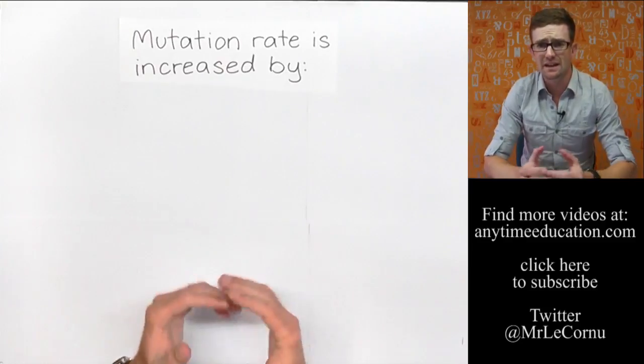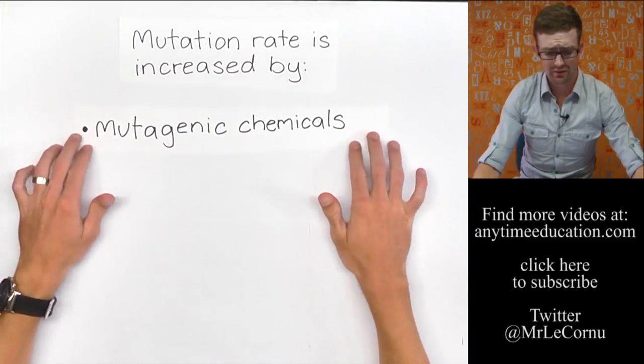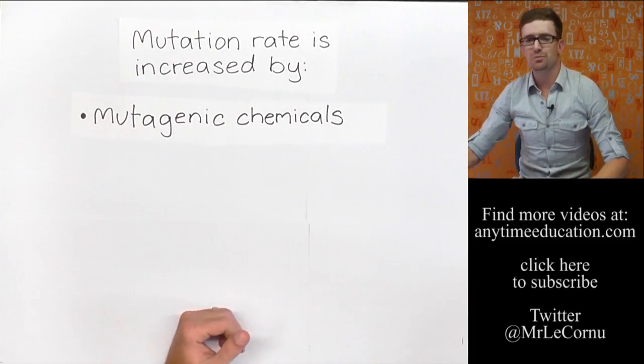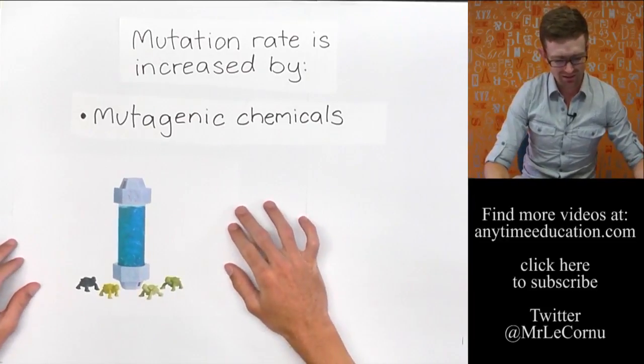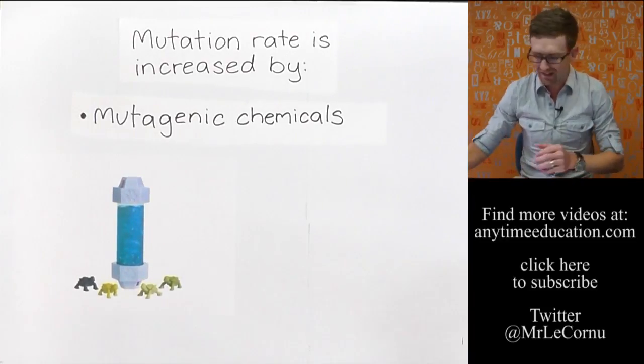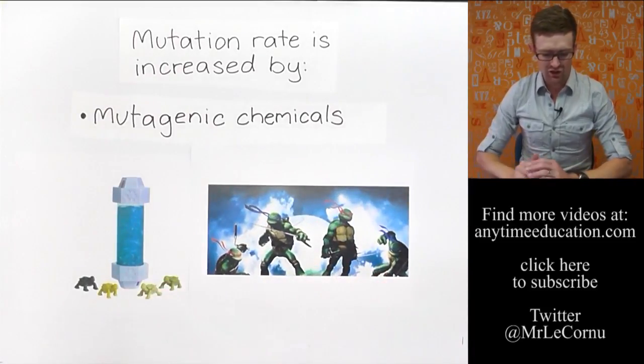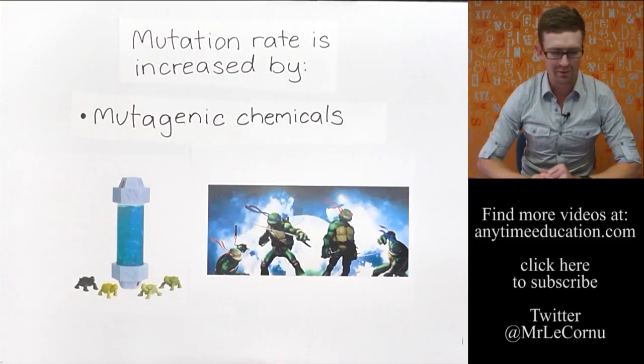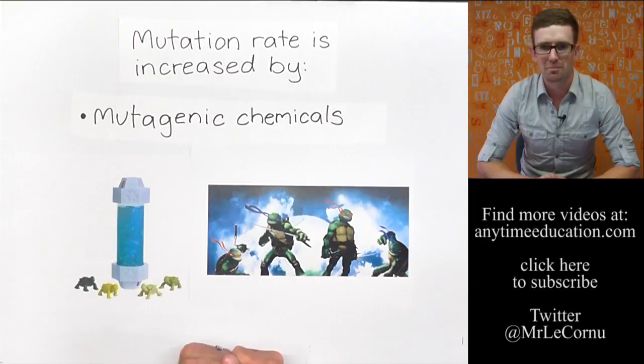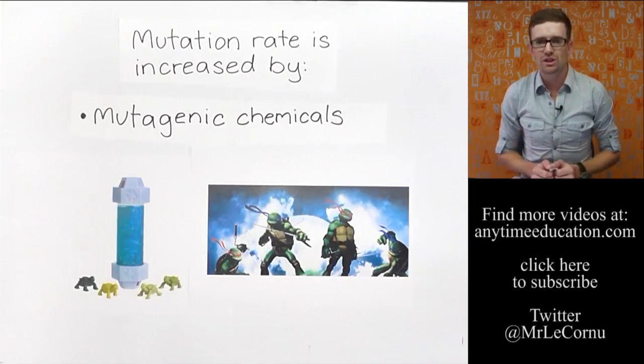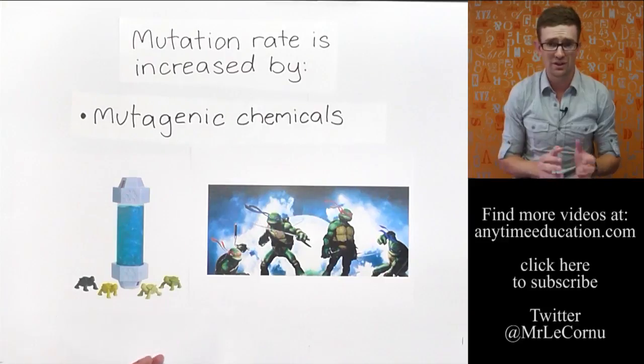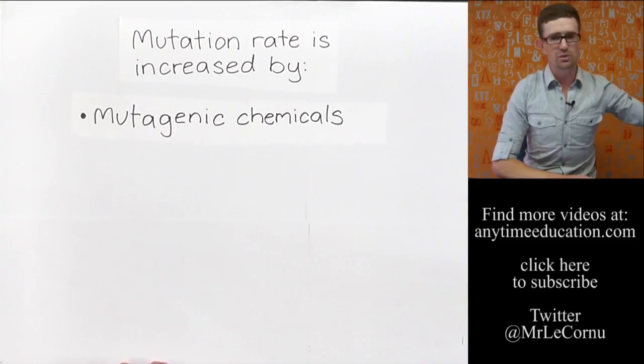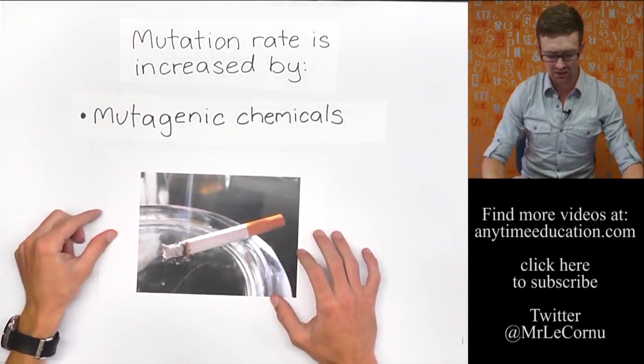The second factor that can increase the rate of mutation is mutagenic chemicals. A famous example of a mutagenic chemical is this one here, one of my favorites. The ooze that created these guys here, the Ninja Turtles, my favorite. A fictional mutagenic chemical, the ooze was something made up in a movie. But there are mutagenic chemicals. There are chemicals that can cause mutations in DNA. A real-world example of a mutagenic chemical is cigarette smoke.